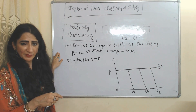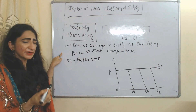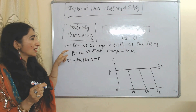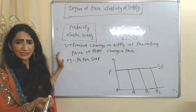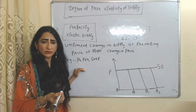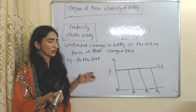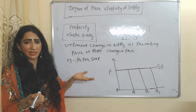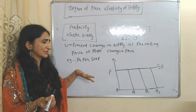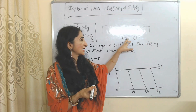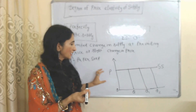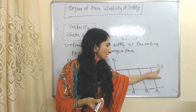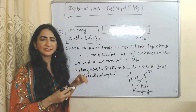The second degree is perfectly elastic supply, which means unlimited change in supply at the prevailing price or with a slight change in price. This is possible for goods whose production cost is constant or very low — for example, paper and soap, where production cost is very low. Producers can increase supply to an unlimited level at the prevailing price, so elasticity of supply equals infinity. In the diagram, price is constant at OP but supply increases from Q1 to Q2, and the horizontal SS curve represents the supply curve.